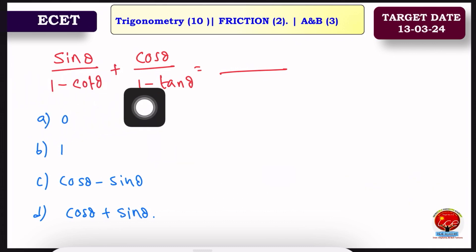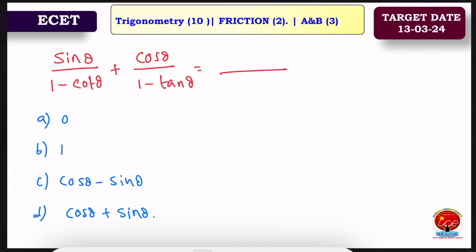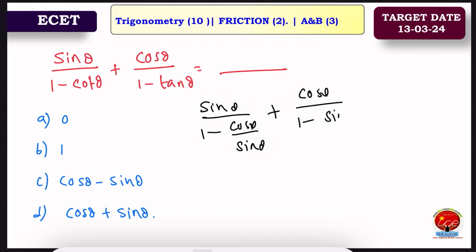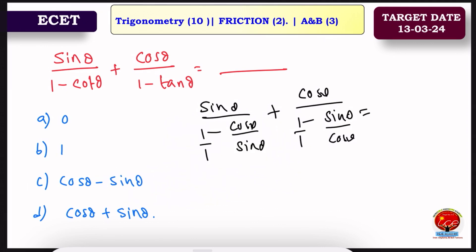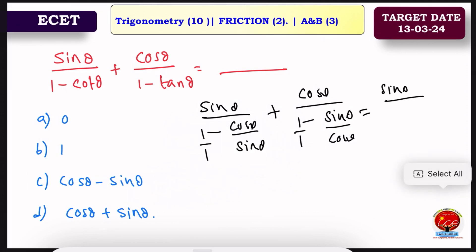One more question: sinθ/(1 − cosθ) + cosθ/(1 − tanθ). We will solve this problem. Sinθ/(sinθ divided by 1 − cosθ by cosθ) divided by sinθ. We cross multiply. So we get sinθ by sinθ minus cosθ by sinθ.